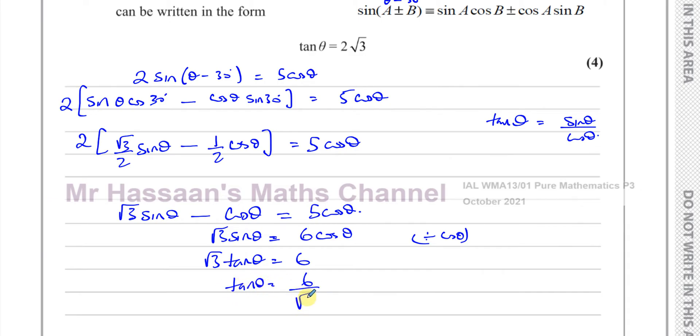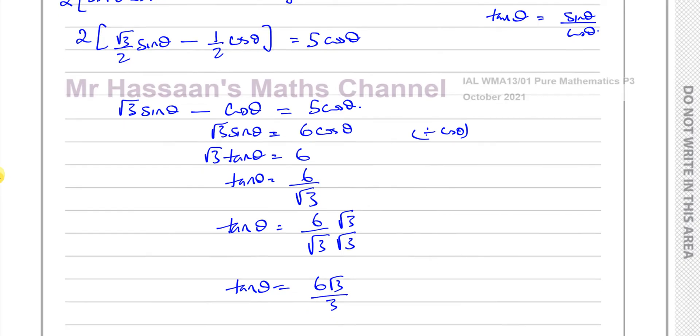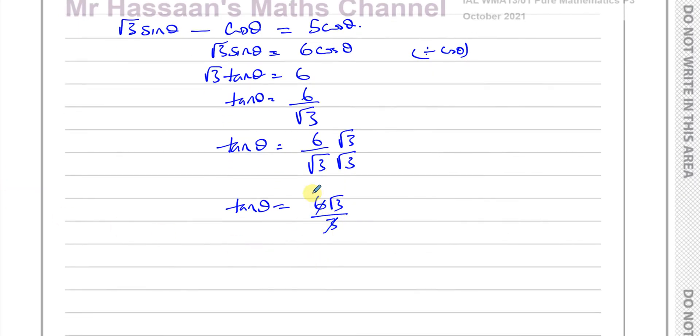So now we can say tanθ is equal to 6 over √3. Now this will give you 2√3 even if you stick it in your calculator, but you can show how it works by rationalizing the denominator, multiplying both top and bottom by √3. So you end up with tanθ = 6√3/3, and you know that that's equal to 2√3 as required. And that's what we had to show and that's what we've shown.